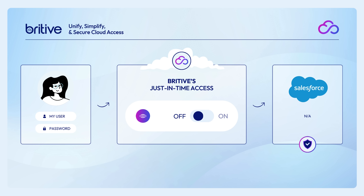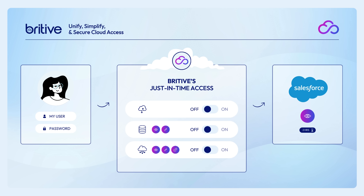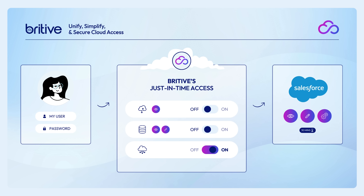In the Britive model, as you elevate your responsibility or permissions needs, we can actually create those as separate, distinct profiles. This granular approach means that you check out only the level of access you need. If from your normal day-to-day you only need read-only access to your accounts, that's what you work with — and that's all Salesforce has for you. When you're done, you check the access back in or it expires automatically, and Britive actually removes that from your account. Only when you need higher-level power user functions, like administrative controls, do you check out those specific permissions. You are truly using the least privileges needed for your job, and they are only being activated when required.